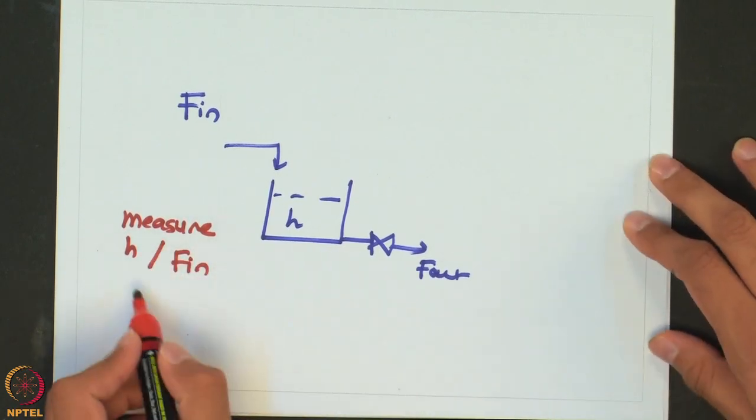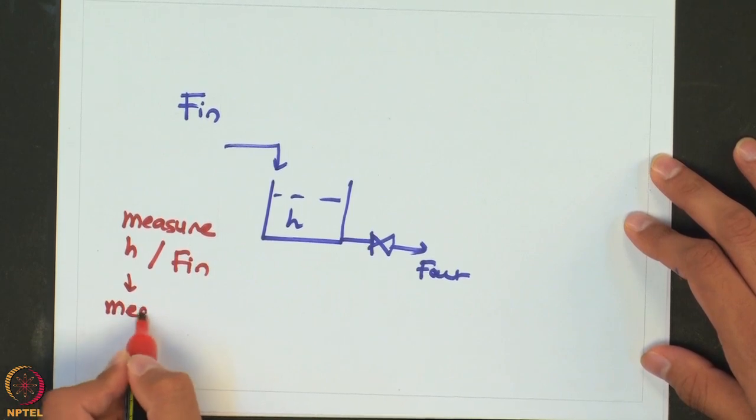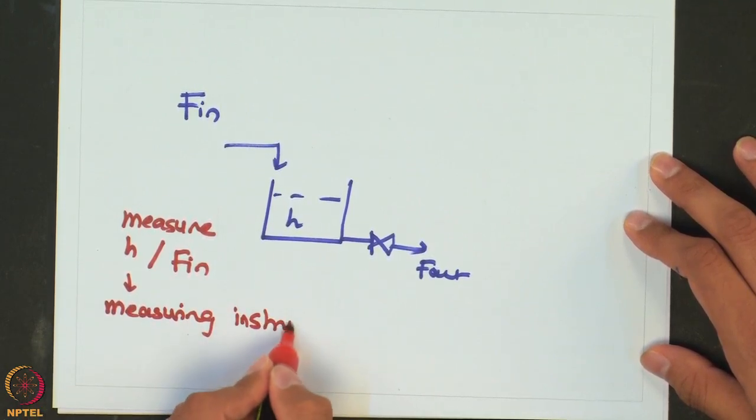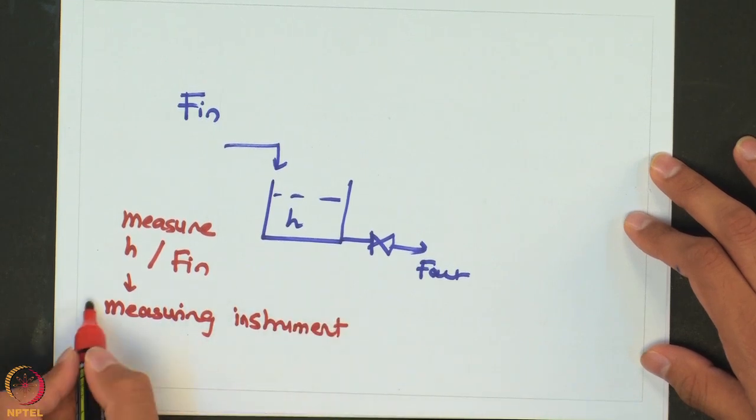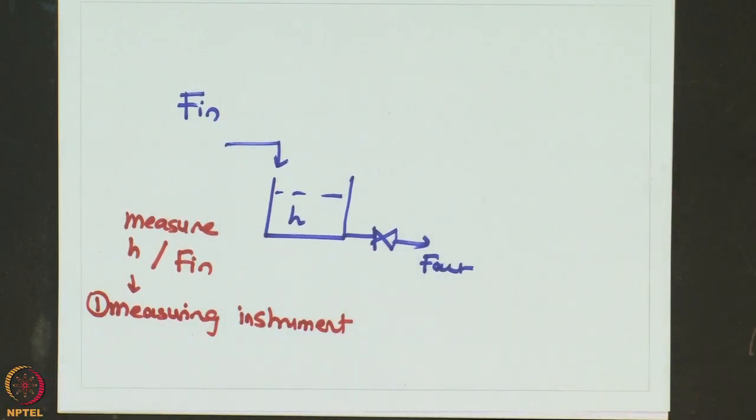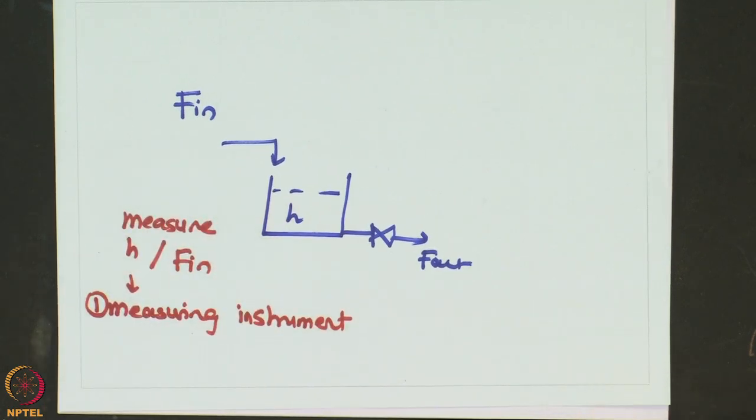All you need is a measuring instrument. The first thing which is required is a measuring instrument which would measure either the control variable or the disturbance variable.